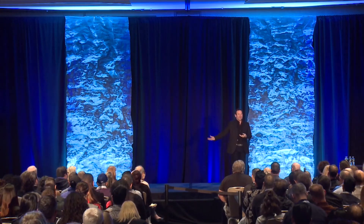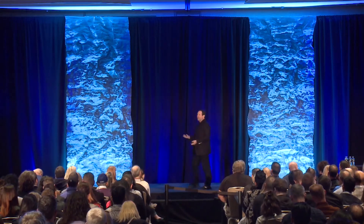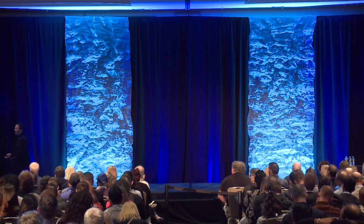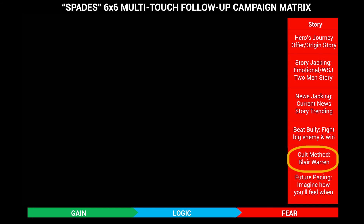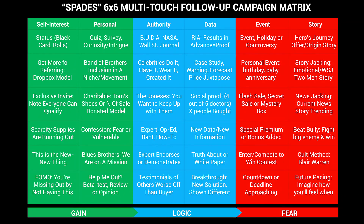Ellen story-jacked too. Think about how you can use other people's stories, because stories are everything. Newsjacking, storyjacking, hero's journey stories, beating a bully, fighting a big enemy and winning. Blair Warren — if you Google 'Blair Warren one-sentence persuasion' — it embodies a lot of study on how cults get people to convert and do things they might not otherwise do. And then future pacing, where you tell a story: 'Imagine how you'll feel when you come home to your beautiful house.' Creating messages using this matrix gives you tremendous flexibility in creating stories.